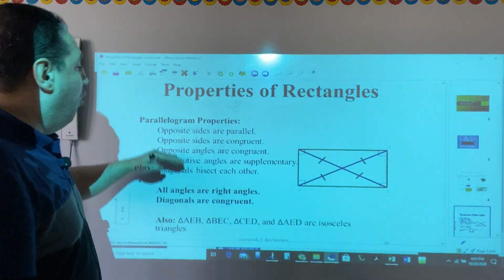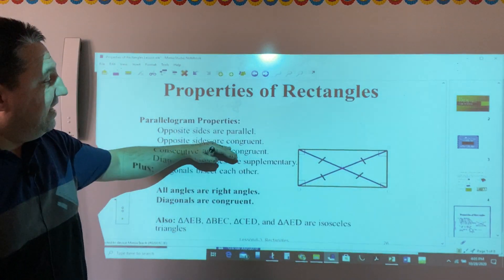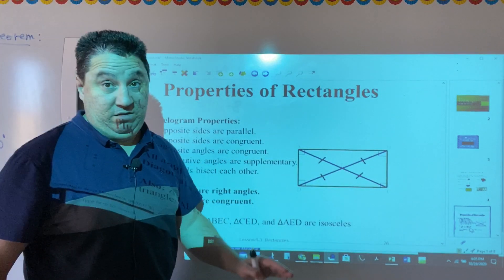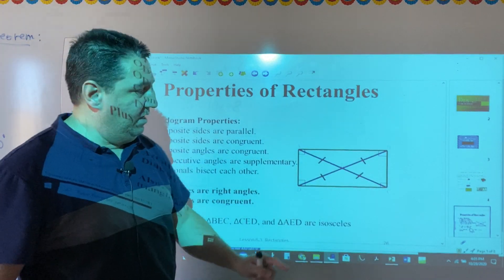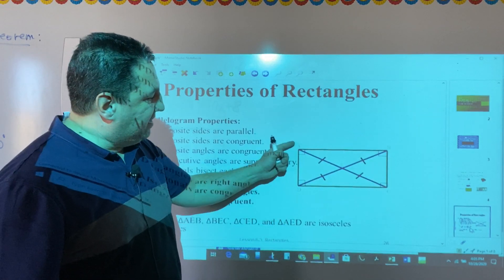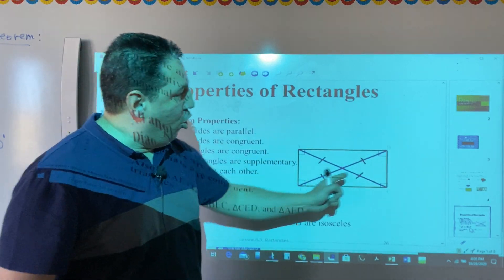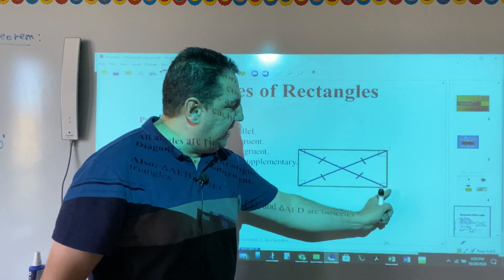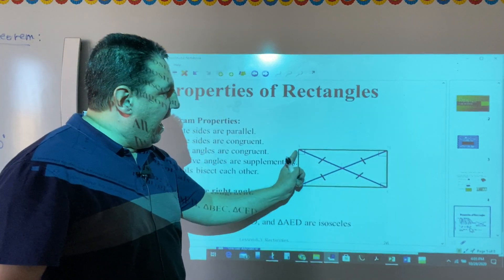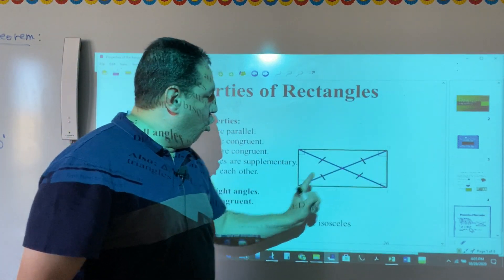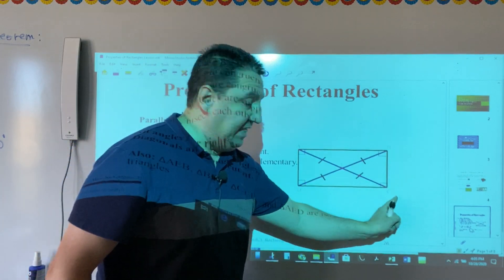More than that, opposite sides are congruent. Which means AD is congruent to BC, and AB is congruent to DC.